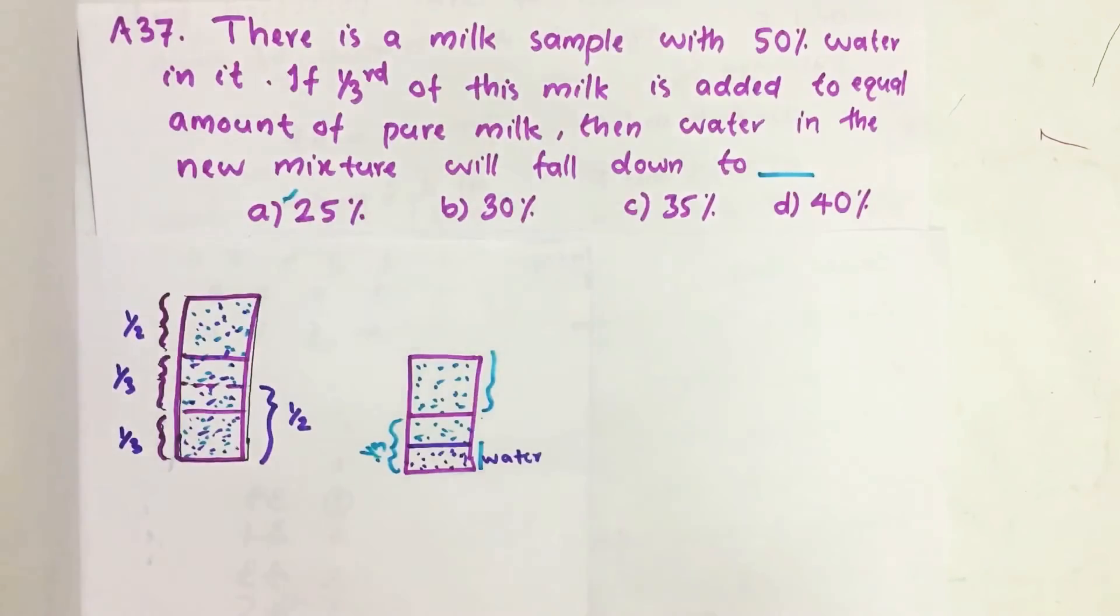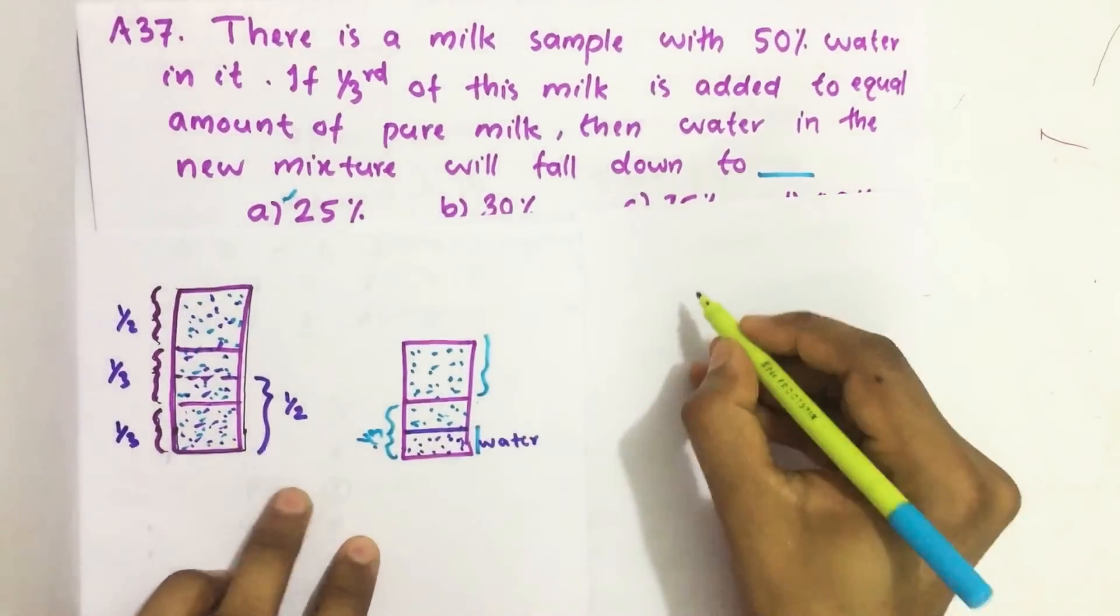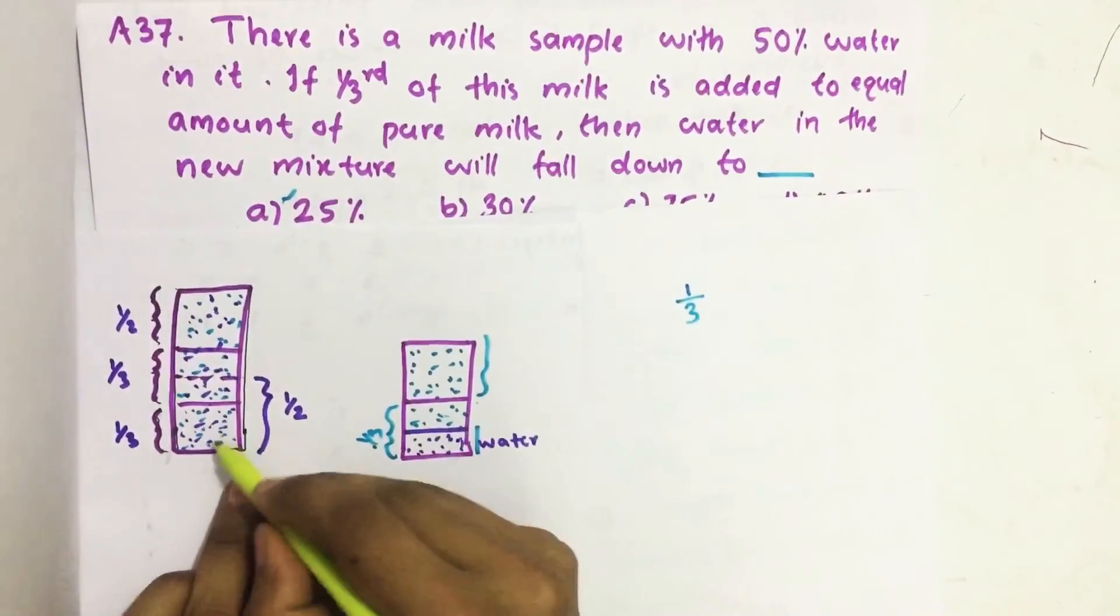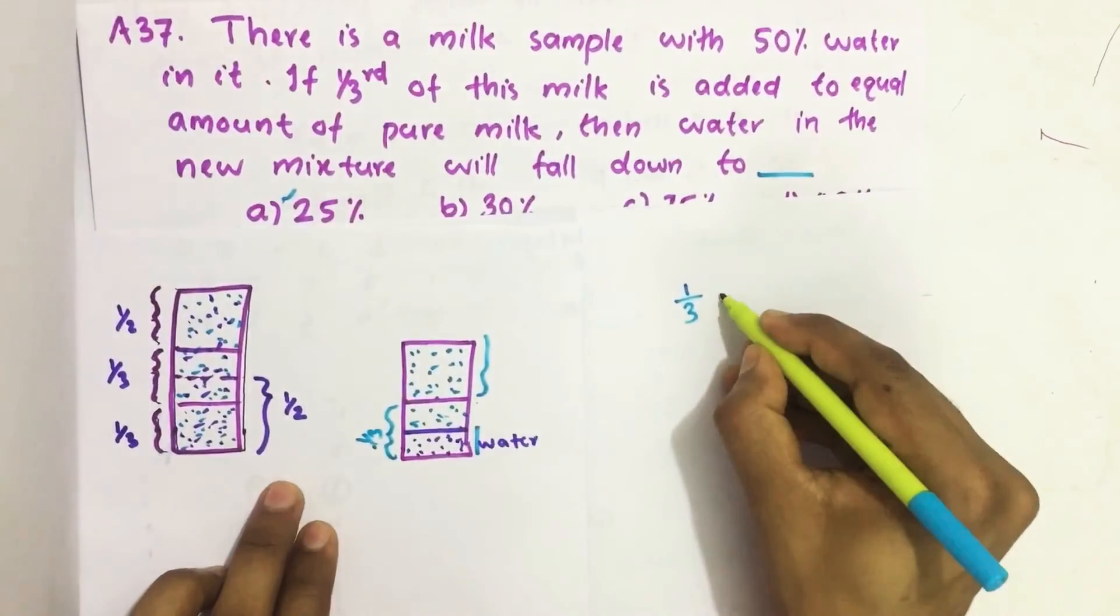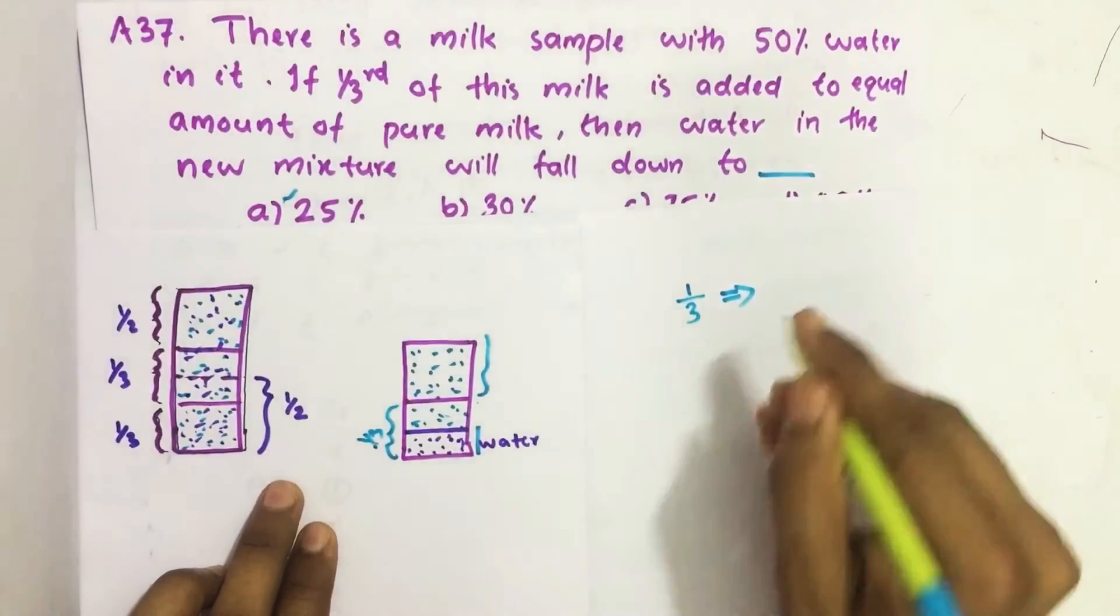Or otherwise we can do by calculations. So from here we took one by third of this mixture. Out of this one by third, half of this one by third is water.